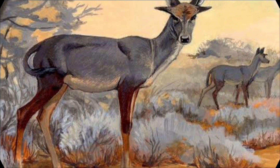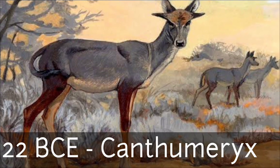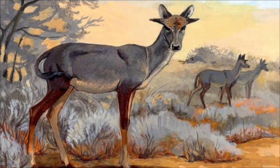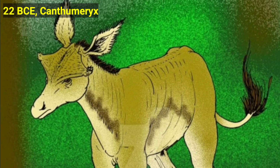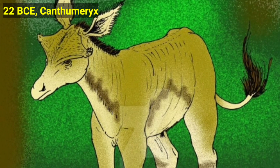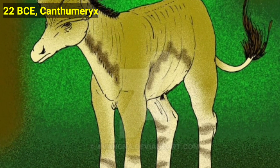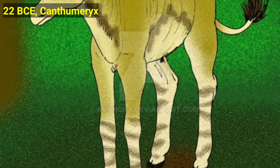Later on in 22 BCE, there were Canthomerics. This is an extinct genus of primitive giraffid. This giraffe ancestor lived about 16 million years ago. Their reproduction is viviparous and dioecious.